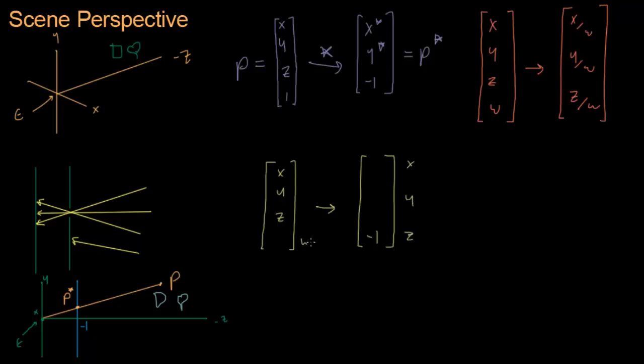This is going to be z divided by whatever is right here. We want negative one, so there can only be one thing here: negative z. You're going to have x over negative z, y over negative z, and then z over negative z, which is just negative one.